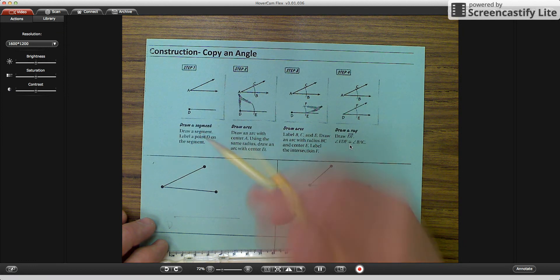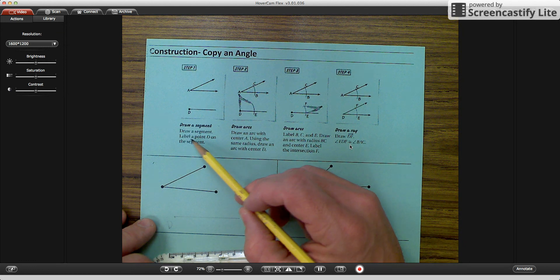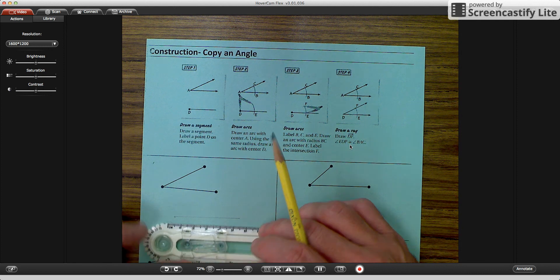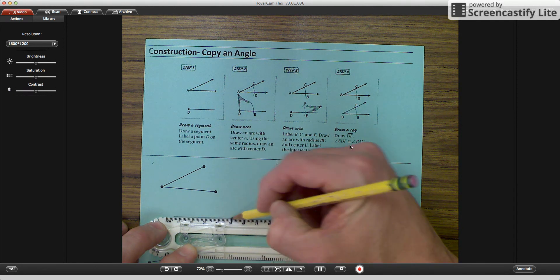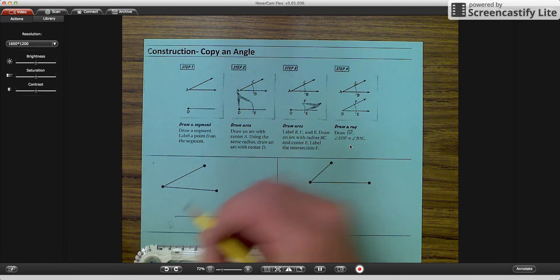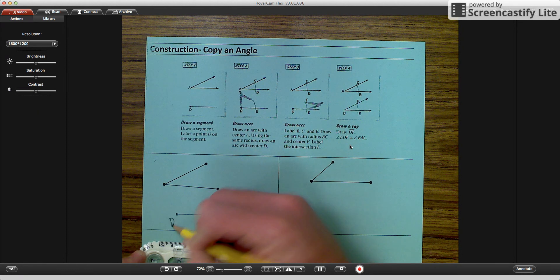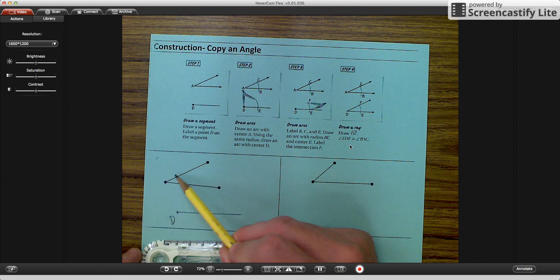Step one says draw a segment and label a point D on the segment. So I'm going to go down here into my box and I'm going to draw a segment, make a point and label it D. So we are going to copy this angle that you see right down here.